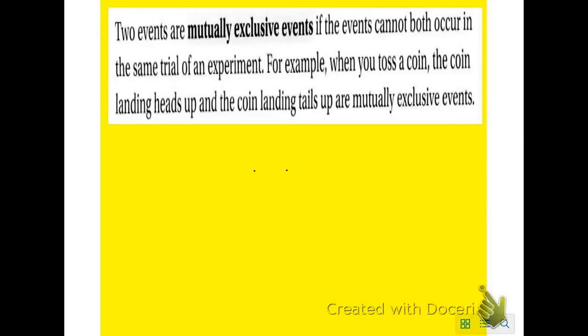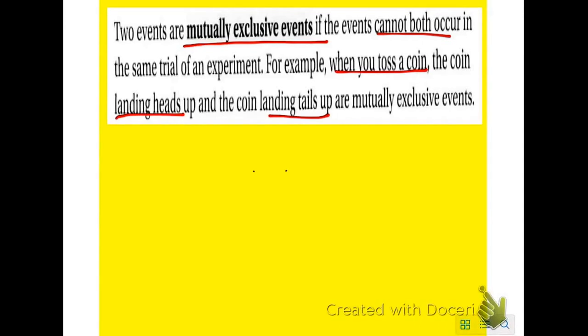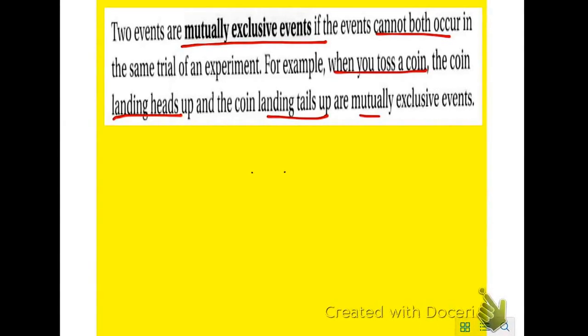Today we're going to talk about mutually exclusive events. They're events that cannot occur at the same time. For example, when you toss a coin, there's no way it can land on heads and land on tails at the same time. So they're called mutually exclusive.